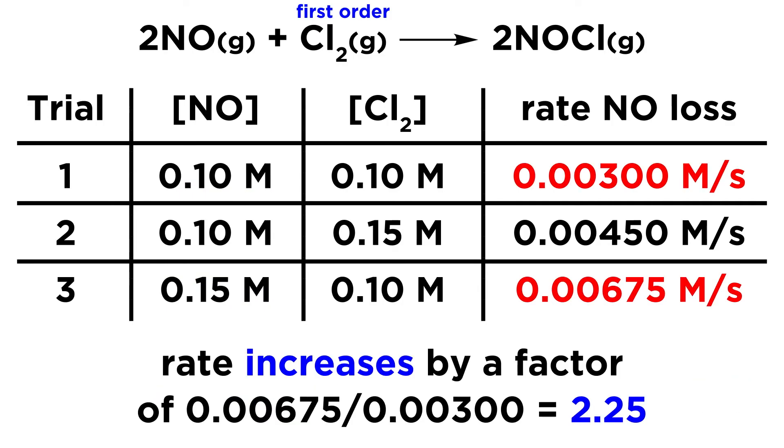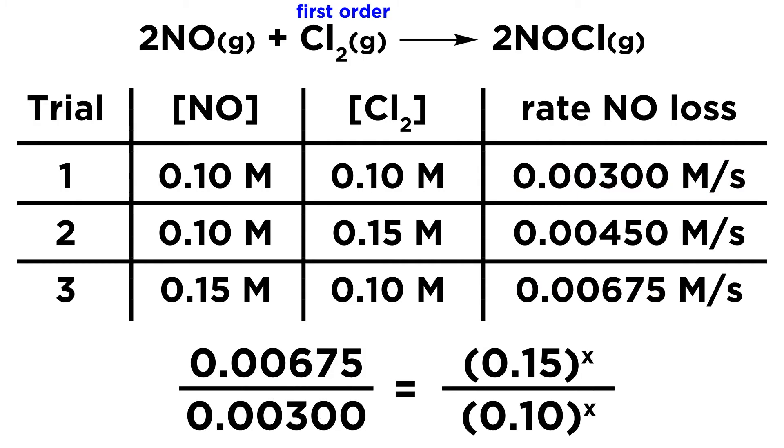However, this time the rate increases by a different factor, and to find out what that factor is, that is going to be 0.00675 divided by 0.003, and so that is a factor of 2.25. We would have to multiply that first rate by 2.25 in order to get the second rate. So this is a little bit different. Let's use the same equation. So we've got our rate from trial 3 over the rate from trial 1, and then we have the concentrations raised to the x power.